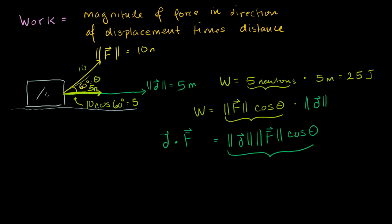If the dot product is a completely foreign concept, I've made multiple videos on it. But just to give a little intuition: when I take f dot d, the idea is to take how much of this vector is going in the same direction as this vector, and then multiply the two magnitudes. That's what we did here. So the work is the force vector dot the displacement vector, and this of course is a scalar value.